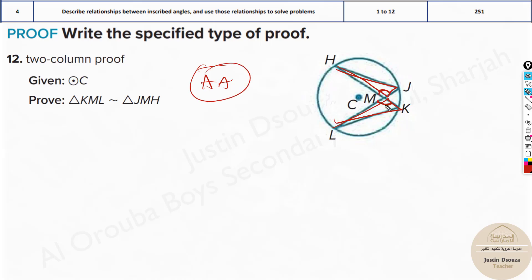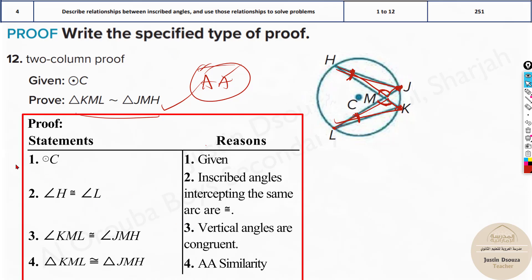I can tell this angle is equal to this angle. Why? Because they are vertically opposite. And now look at H. That's inscribing this arc. And what about L? It's inscribing the same arc. So angle L must be equal to angle H. They both are congruent. So I've got two angles congruent. Therefore, they are similar. If I just prove any two angles equal, then this is proved.